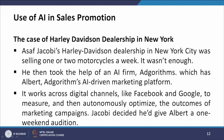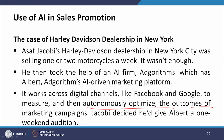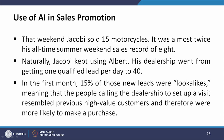Let us look at the case of Harley Davidson dealership in New York. Asaf Jacobi's Harley Davidson dealership in New York City was selling one or two motorcycles a week, and it was not enough. He then took the help of an AI firm, Adgorithms, which has Albert, an AI-driven marketing platform. It works across digital channels like Facebook and Google to measure and autonomously optimize the outcomes of marketing campaigns. Jacobi decided to give Albert a one-weekend audition — that weekend he sold 15 motorcycles, almost twice his all-time summer weekend sales record of 8.